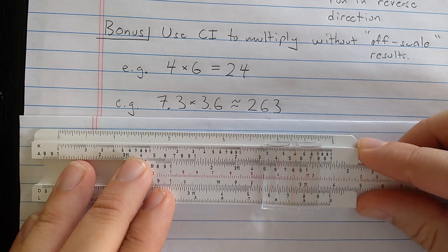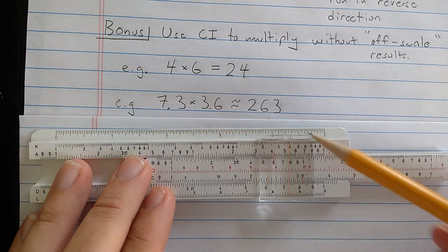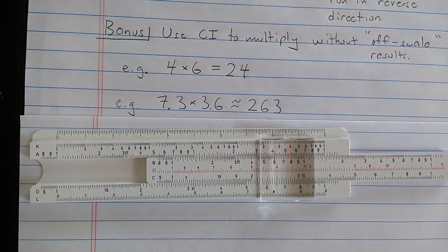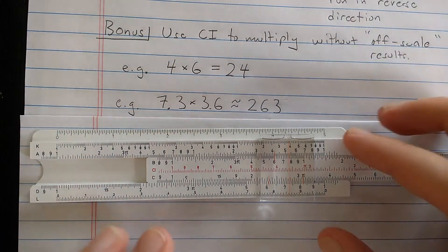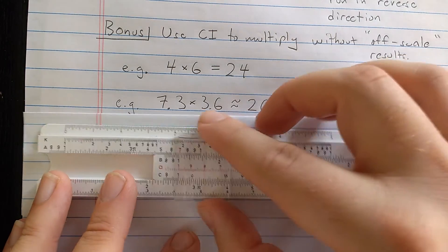then I find 3.6 on the CI scale. Okay, now I'm remembering that the CI scale is running backwards. So you see here, here is 3.5, so 3.6 is to the left, because the scale runs backwards. So I line the two numbers, then find the index.